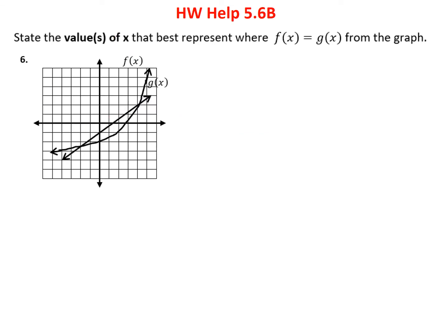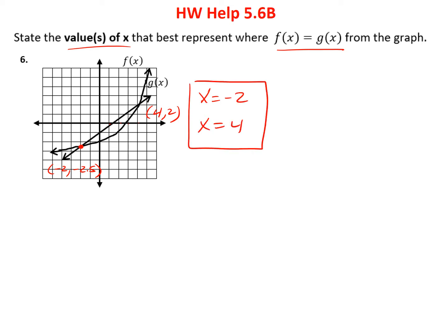Problem 6 is like problem 5 — we find where the graphs intersect, because that's where they're equal, and we identify the x values. The first intersection is at approximately x equals minus 2.5. The other intersection is at x equals 4. So my answers are x equals minus 2.5 and x equals 4. Those are fairly simple problems.